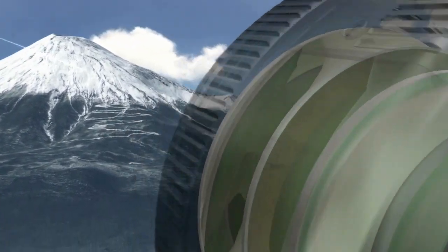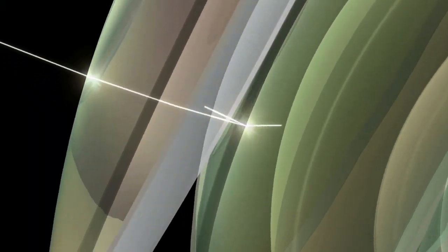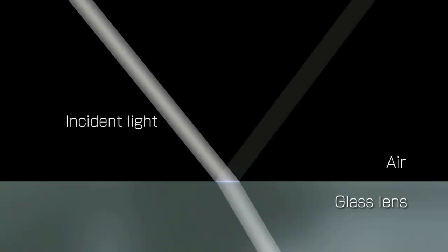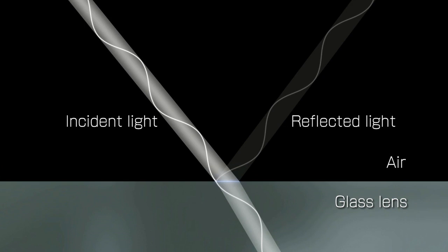Ghosting and flare can appear unexpectedly, detracting from otherwise beautiful images. Both phenomena result from light reflecting off the camera lens. Measures have been taken to prevent this reflection.